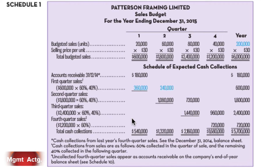Here is our sales budget and everything starts from the sales budget. Notice that the dates in here — it's for the year ending December 31st, 2015. The balance sheet we looked at was for the year ending December 31st, 2014, and we're going to need some numbers from that balance sheet here. The budget has two parts: Part 1 is the upper section, and Part 2 is the schedule of cash collections.